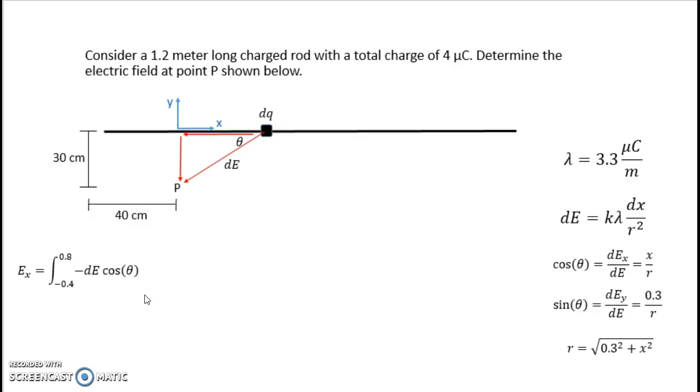Next thing I want to do is replace dE. We said at the beginning that dE was k lambda dx divided by r squared. Next thing I'm going to do is replace cosine theta with its expression in terms of x and r. k and lambda are constants in this problem, so I can go ahead and pull them outside the integral. I've got an x and I'm integrating over x. So that's good. But I need to replace r. So my last step, I'm going to plug in my Pythagorean theorem expression for r. And this is the integral I end up with that I need to evaluate.